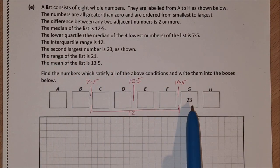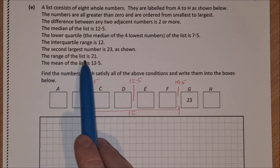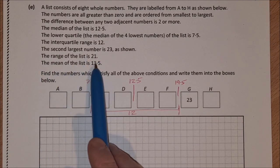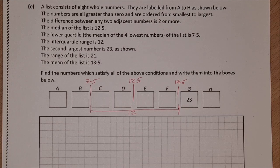The second largest number is 23, as shown. The range of the list is 21, and the mean of the list is 13.5. So let's see if we can start to work out some of the numbers.